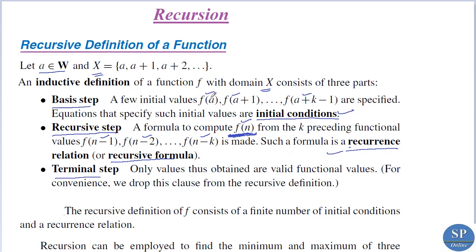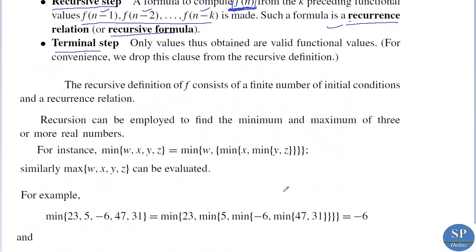We need some values of f at points a, a+1, ..., a+k-1 as initial conditions. Then in the second step we have a recurrence relation or recursive formula. By using that recursive formula we can find the values of f(n). To find f(n) we need the values of f(n-1), f(n-2), ..., f(n-k). Such a formula is the recurrence relation or recursive formula.